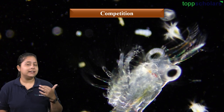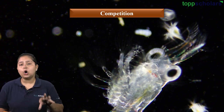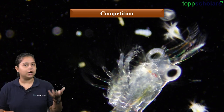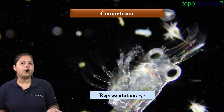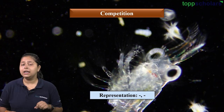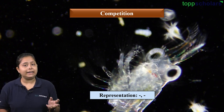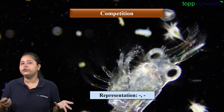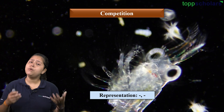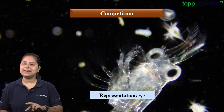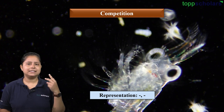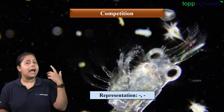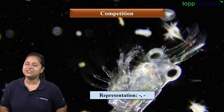Coming back to our discussion: zooplanktons were the common food for flamingos and the resident fishes, so a competition arose. The representation of competition is minus-minus because neither the flamingos nor the resident fishes get enough food — the interaction harms both of them. This is why we have two minus signs for competition.